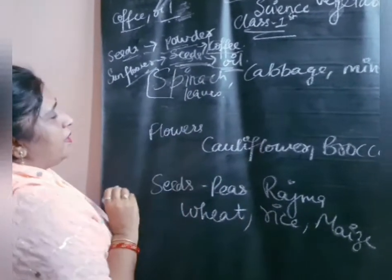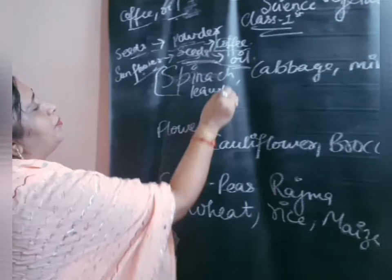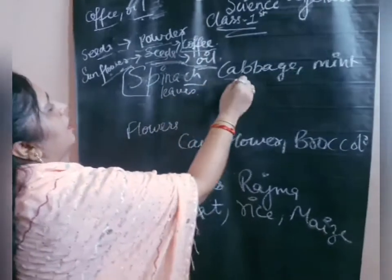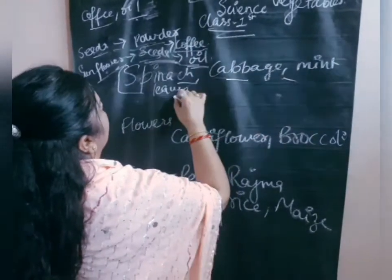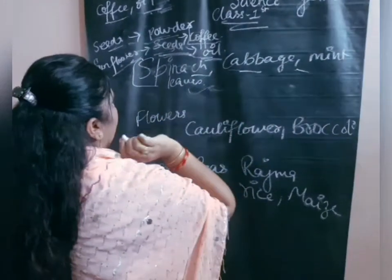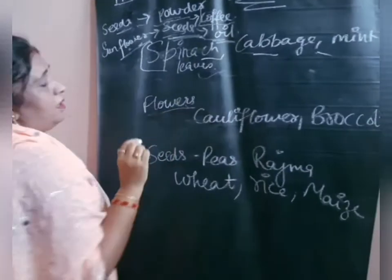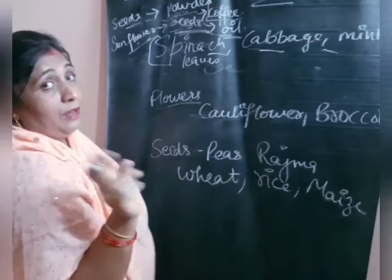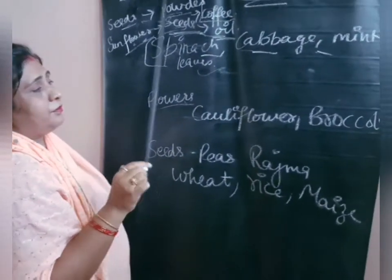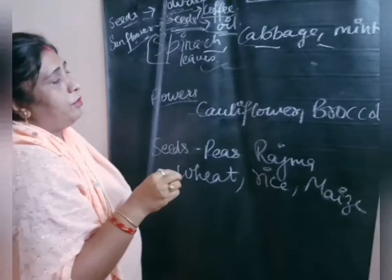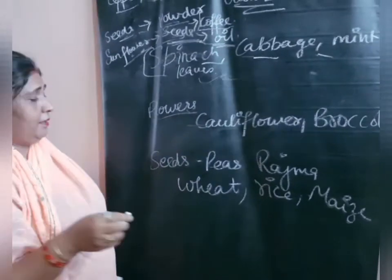We eat the leaves of some plants — that is cabbage, mint, etc. Flowers: we eat the flowers of some plants. Cauliflower and broccoli are the flowers of a plant.